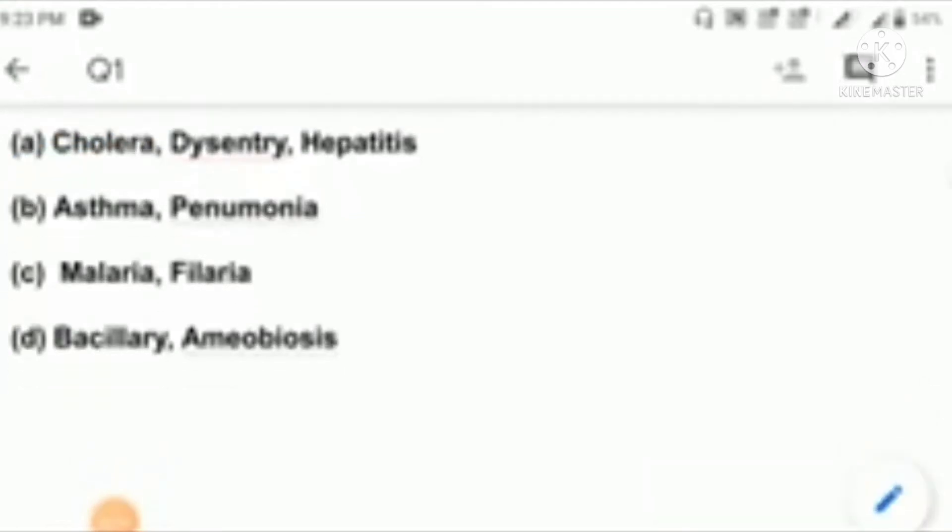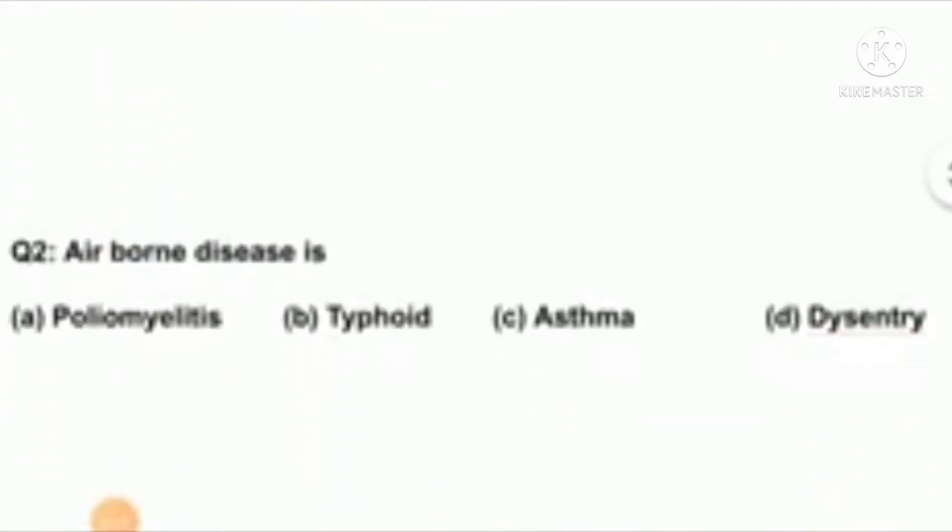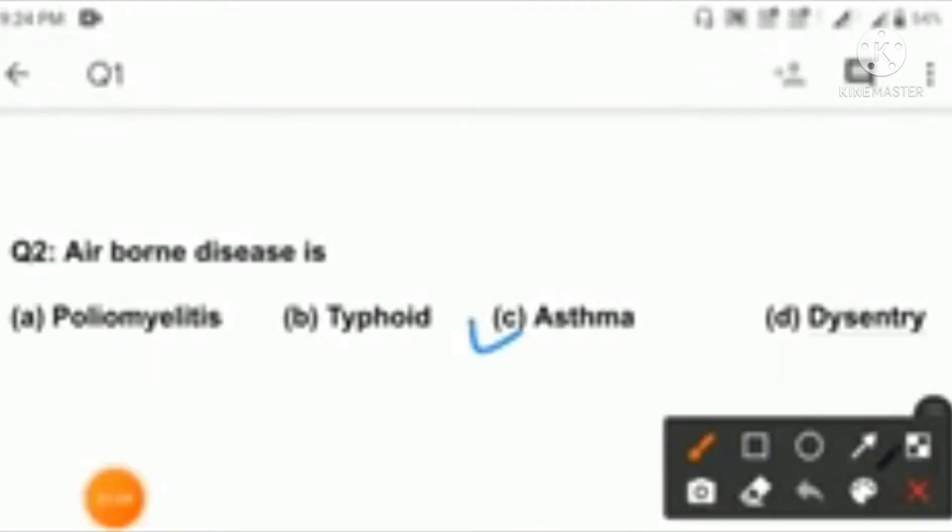Next question, question number two: airborne disease is option A: Poliomyelitis, B: Typhoid, C: Asthma, D: Dysentery. Right answer is option C: Asthma.